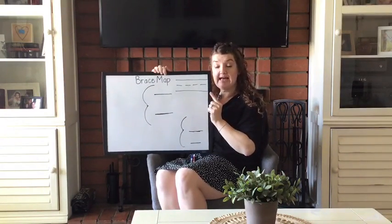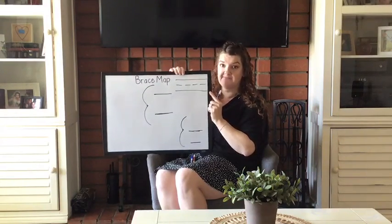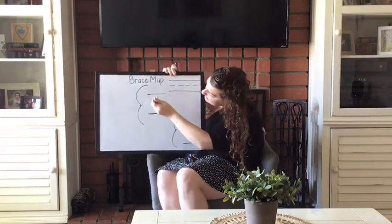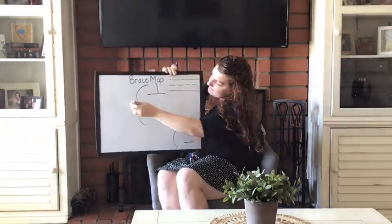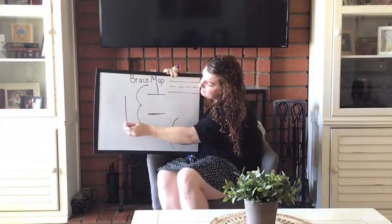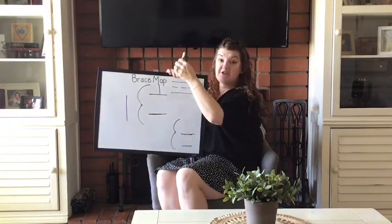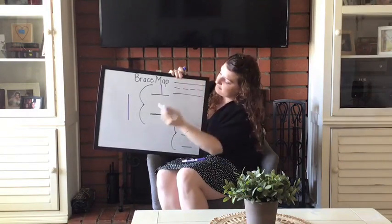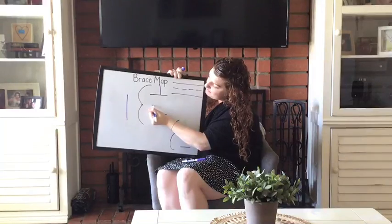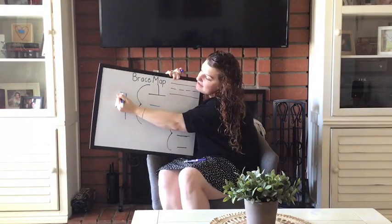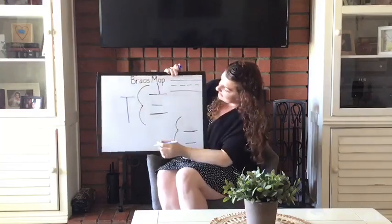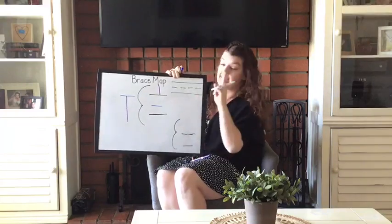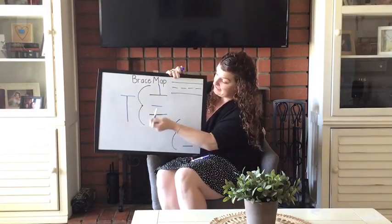Now the capital T and the lowercase t both have two parts. The capital T starts with a big line down — I start at the top and go all the way to the bottom. Then I go back to the top and make a big line across the top. It has two parts, and see, it's grounded.